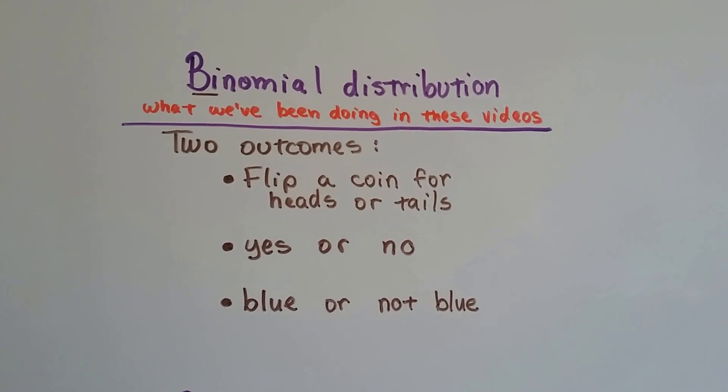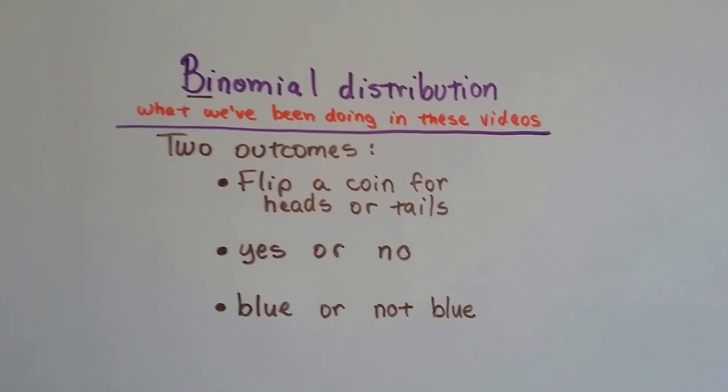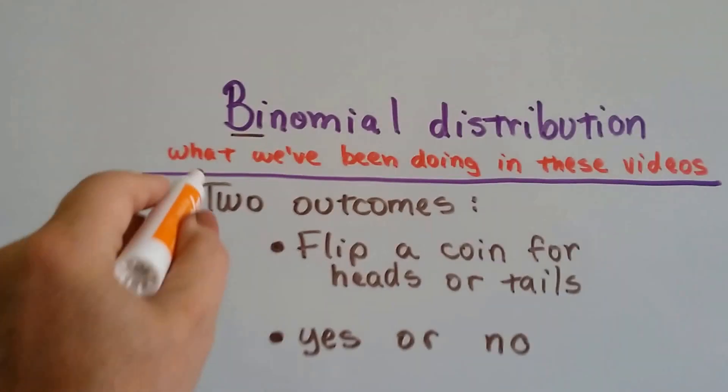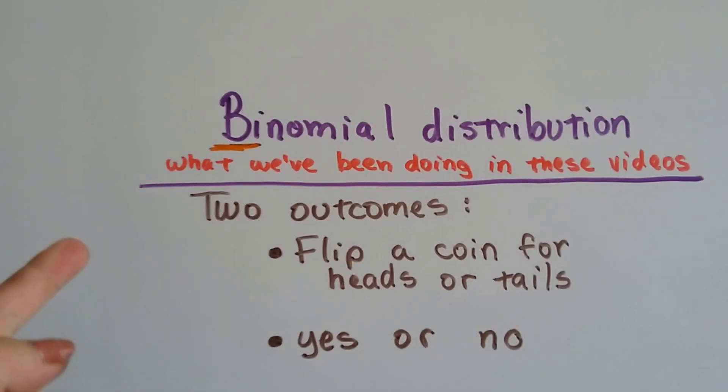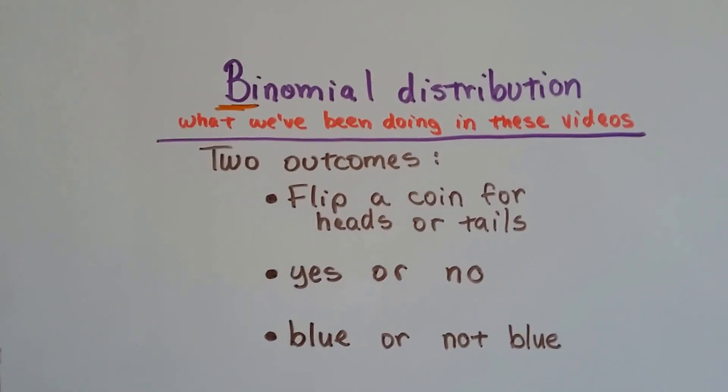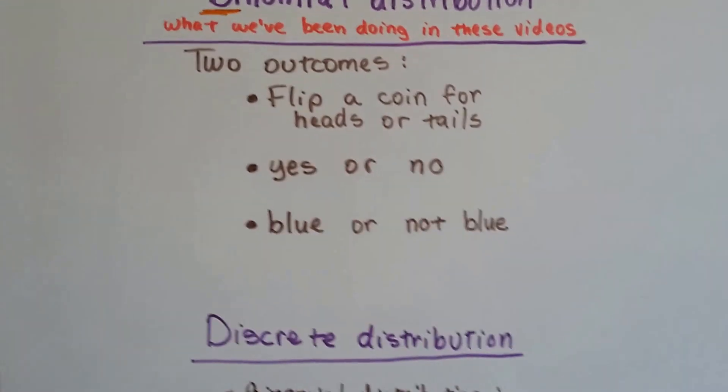So those two outcomes are binomial distributions. See how the word begins with "bi," like bicycle, like a two-wheel bike. "Bi" is the prefix for two, so it's two outcomes.